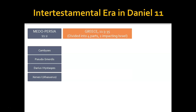In the Greek Empire, 'a mighty king shall arise, who shall rule with great dominion, and do according to his will. And when he has arisen, his kingdom shall be broken up, and divided toward the four winds of heaven, but not among his posterity, nor according to his dominion with which he ruled. For his kingdom shall be uprooted, even for others besides these.' It was not Alexander the Great's children who ruled his great empire — after a period of struggle, his empire was eventually divided between his four generals into four parts. Two of those have direct impact upon Israel and are focused on in the rest of Daniel chapter 11, in relationship to Israel.